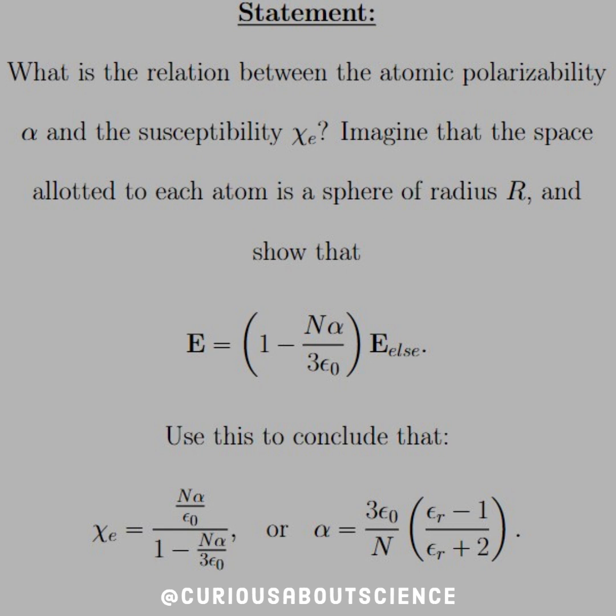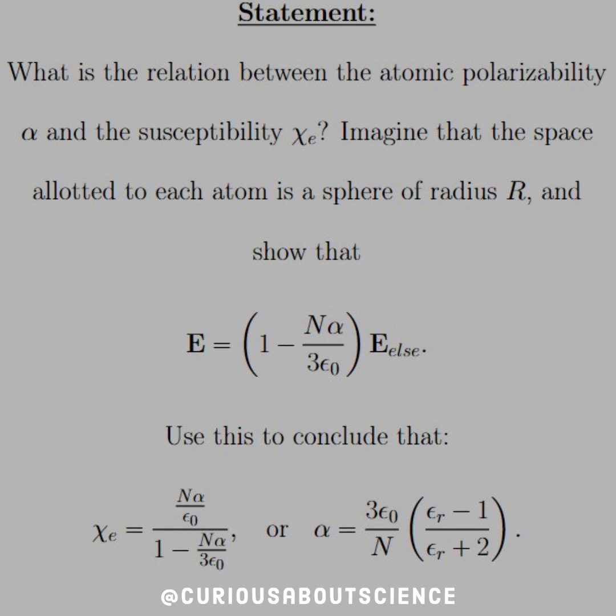So basically the field that's produced by everything else but the atom. Use this to conclude that χₑ equals Nα/ε₀ divided by (1 - Nα/3ε₀), or conversely that α equals (3ε₀/N) times (εᵣ - 1)/(εᵣ + 2).